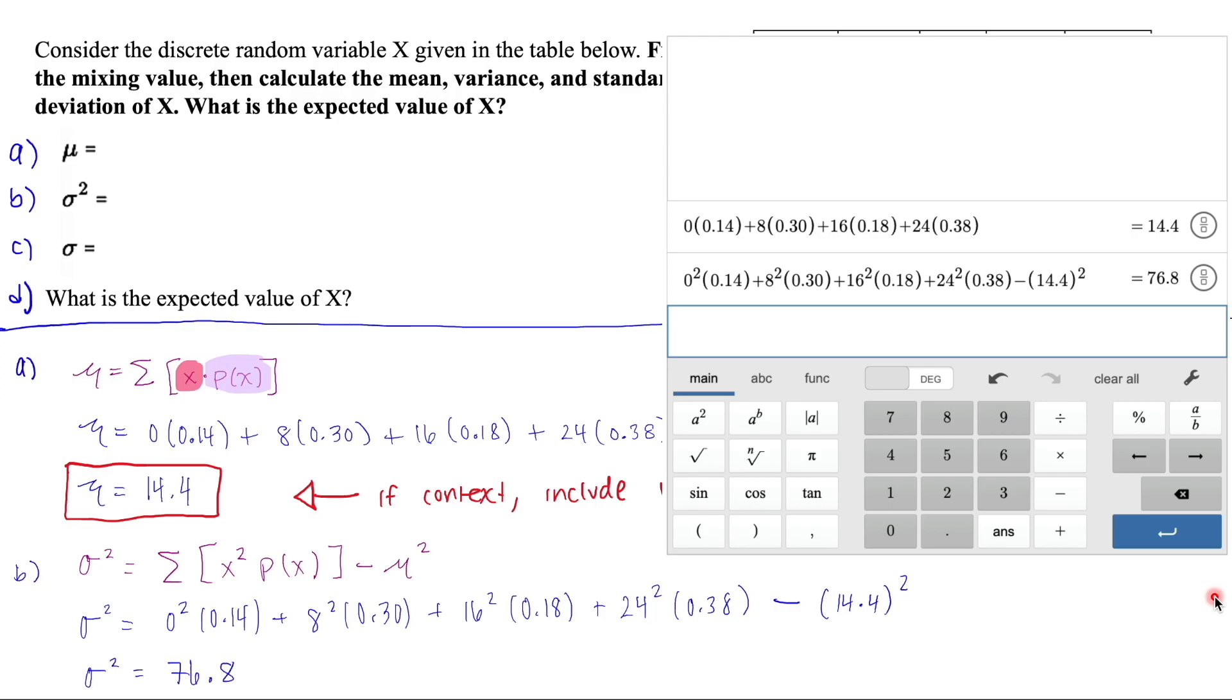All right, and then again, just box your answer. And if we had units, these would be squared units, because variance is a square value.